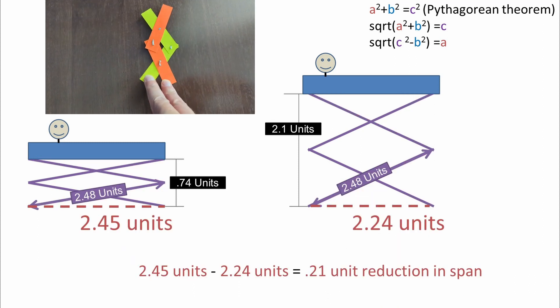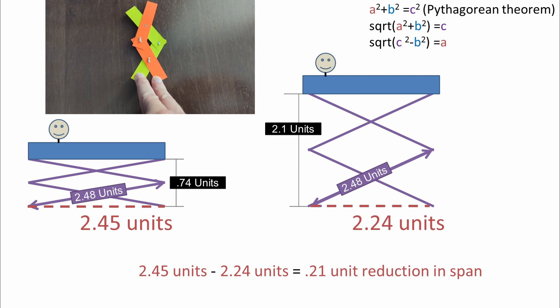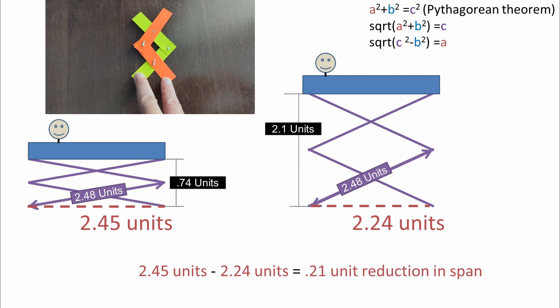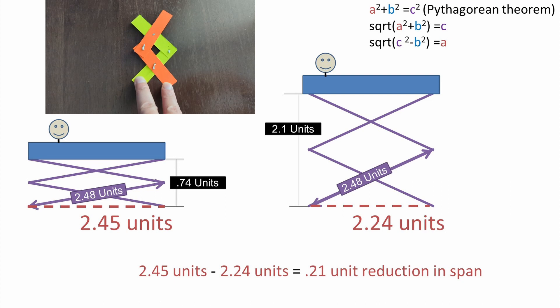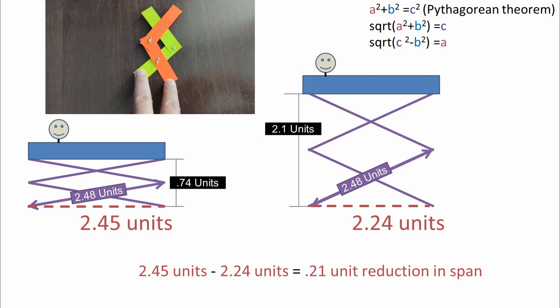Subtracting one of these from the other, we get that we need to reduce the span by 0.21 units to reach the desired height of 2.1 units.